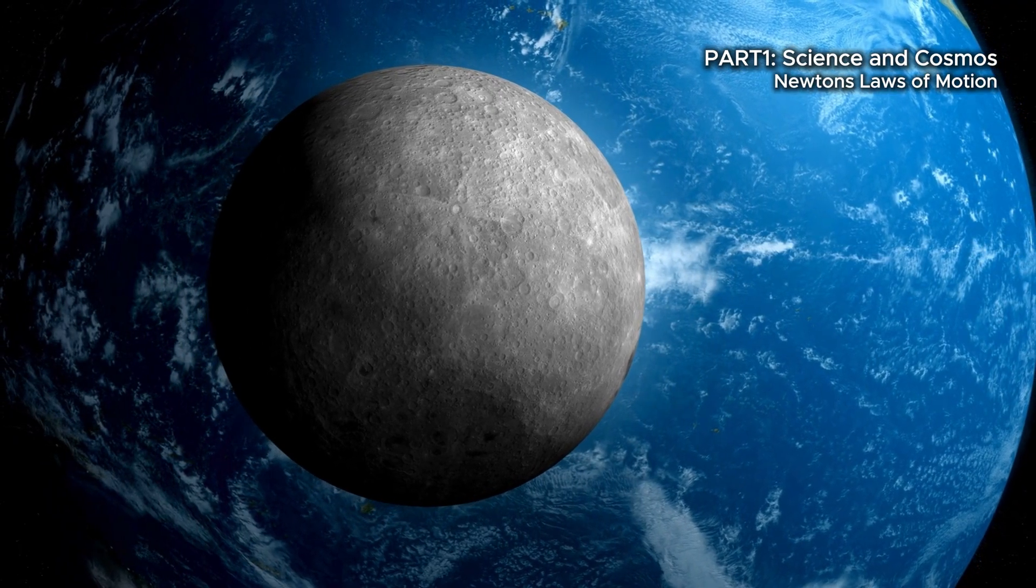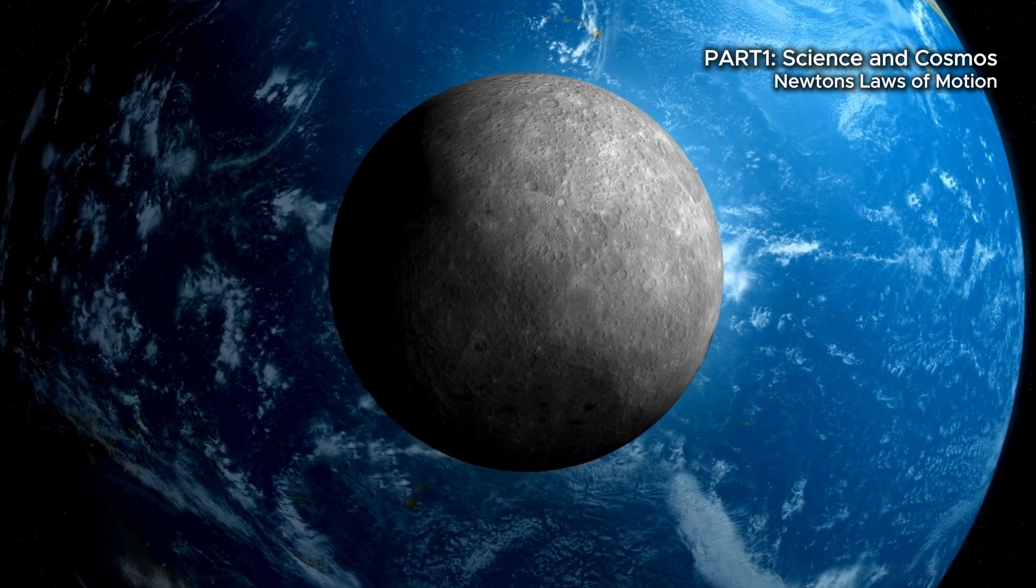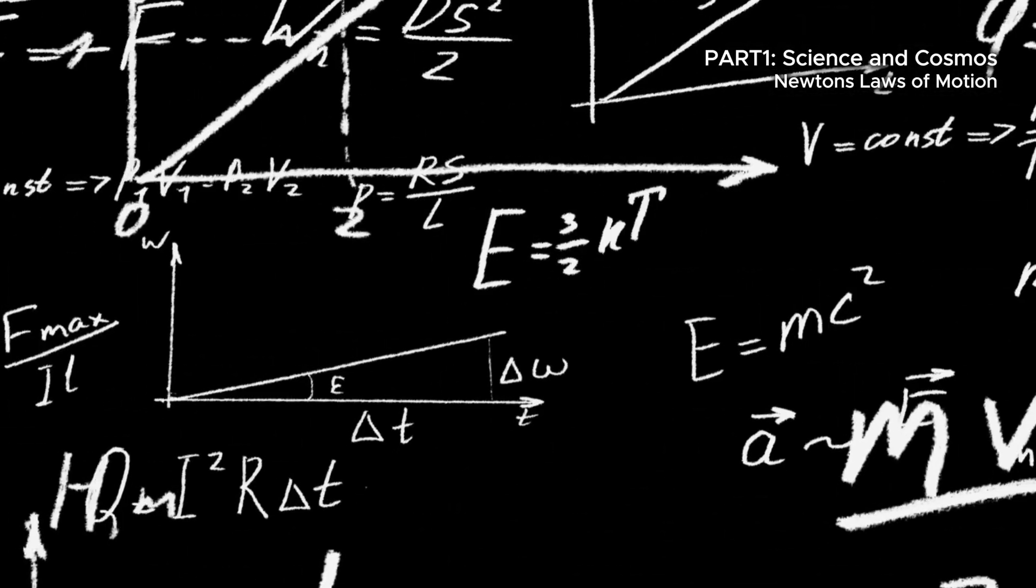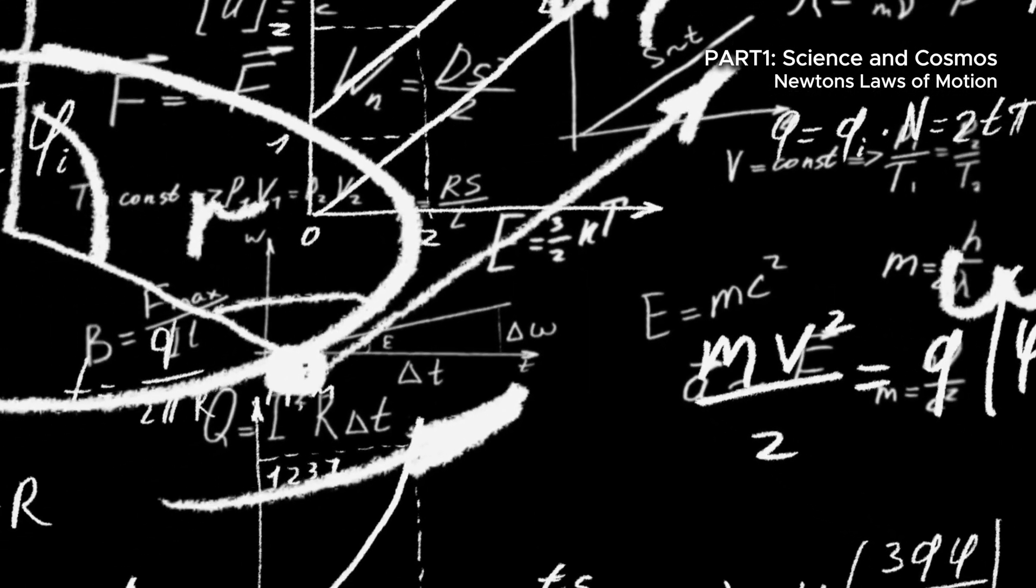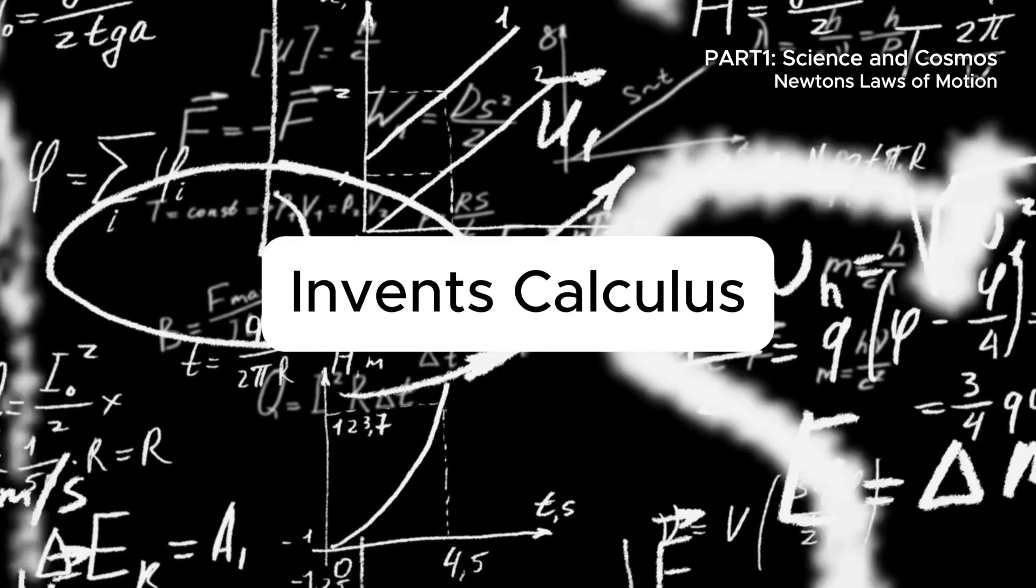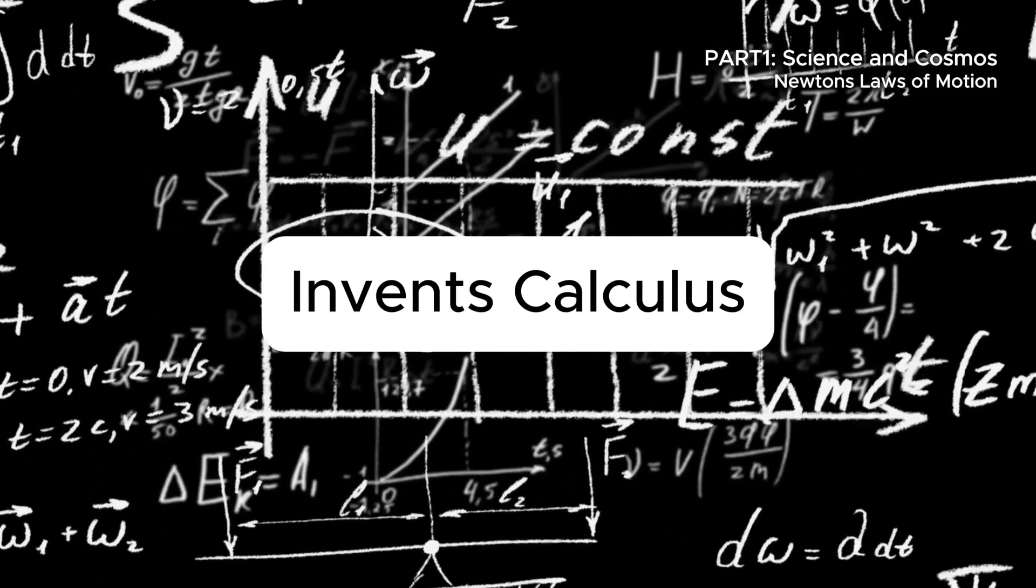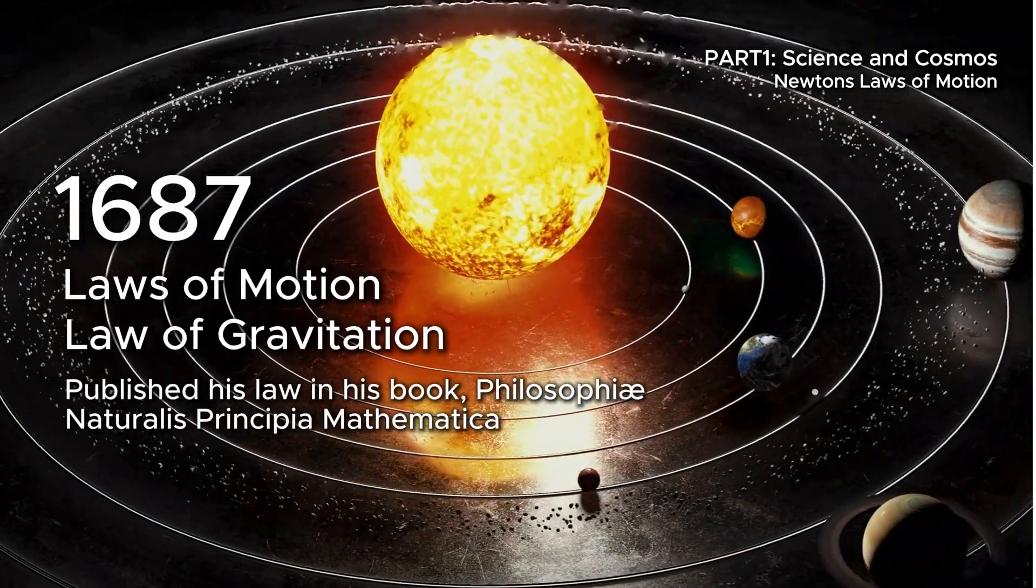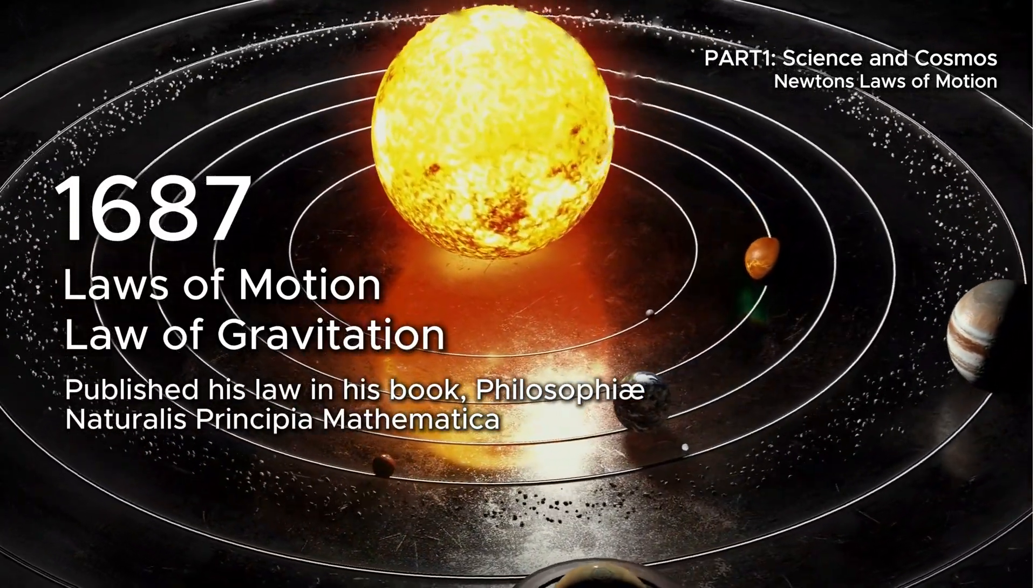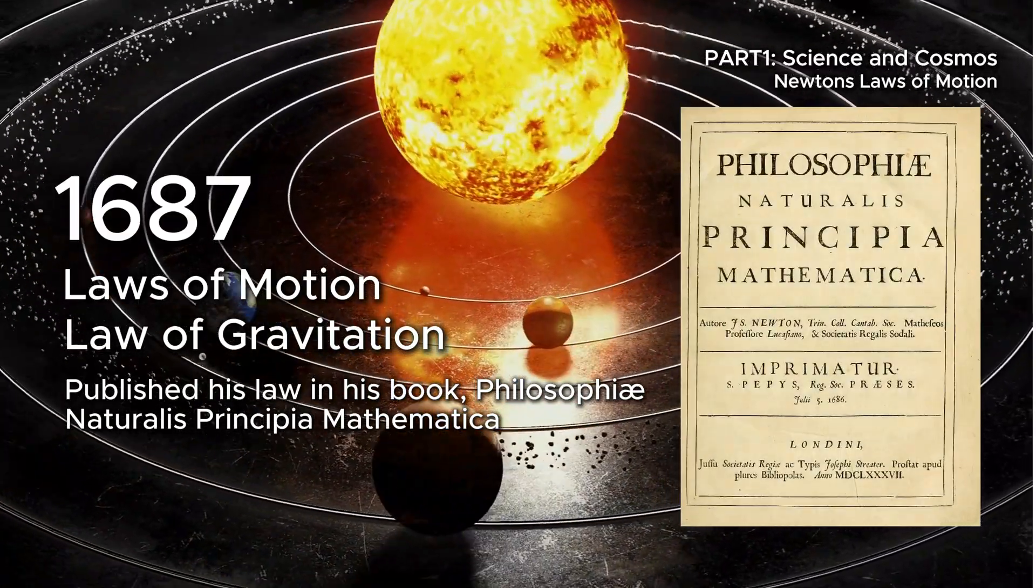To answer this, Newton turned not to large-scale experiments, but to mathematical reasoning. He used Galileo's observations of acceleration, Kepler's planetary laws, and his own invention of calculus to formulate a universal law. By the 1680s, he showed how the same invisible force, gravity, governed both the fall of an apple and the orbit of planets. His 1687 masterpiece, Principia Mathematica, revolutionized our modern world.